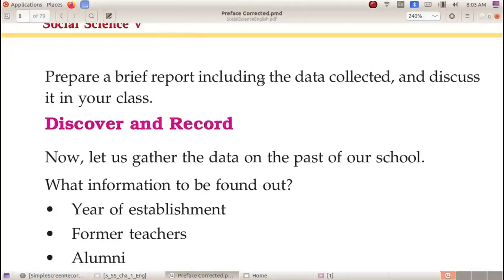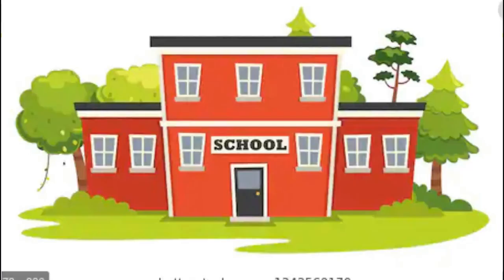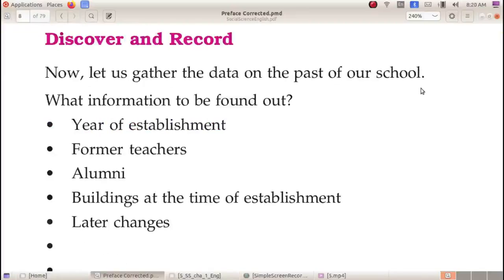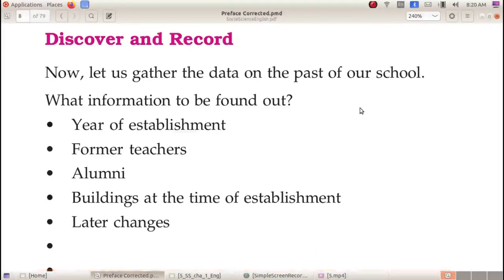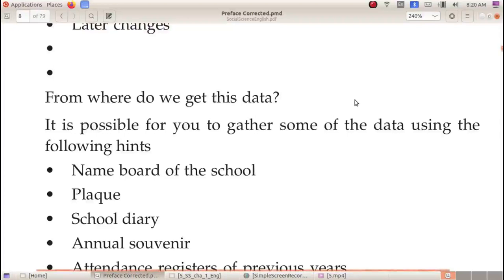So how can we discover our school history? Now let us gather the data on the past of our school. What information is to be found out? These are the following steps to find out our school history. Write these points, then find out school history: year of establishment, former teachers, alumni, buildings at the time of establishment, later changes, etc. Then you can collect the information.